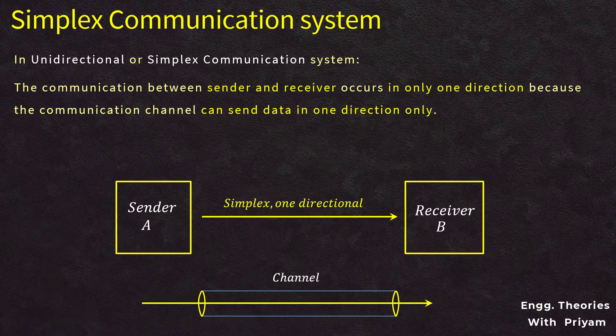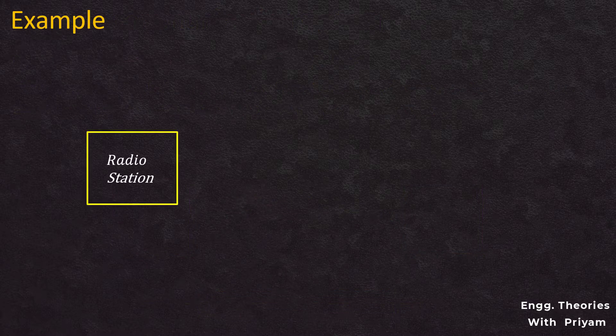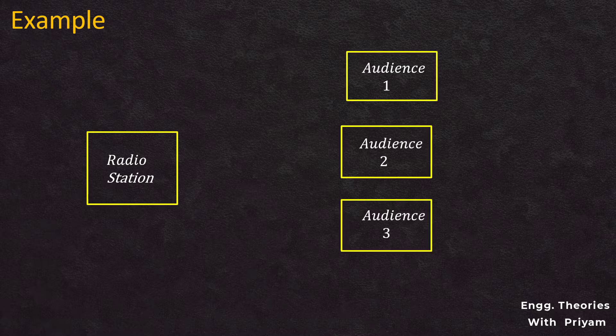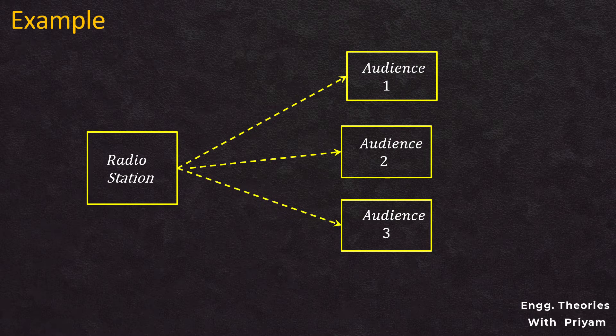A simplex transmission system can be thought of as a one-way road where traffic travels in one direction only — no vehicle coming from the opposite side is allowed. A radio station or any broadcasting station follows the simplex transmission system: the radio station can send signals to its audience, but it can never receive signals from the audience, because there is no channel for transmission from audience to station.